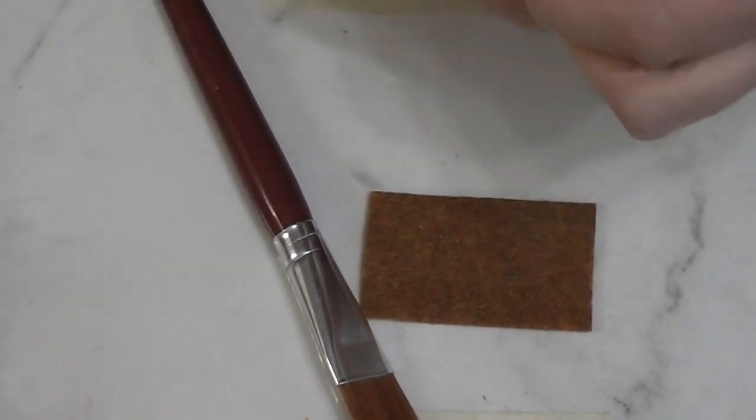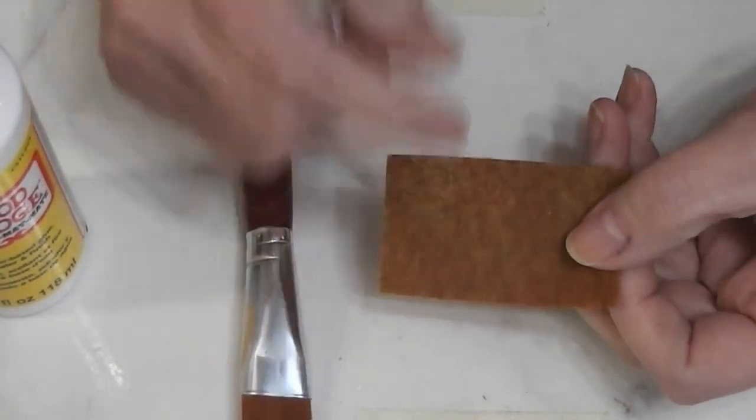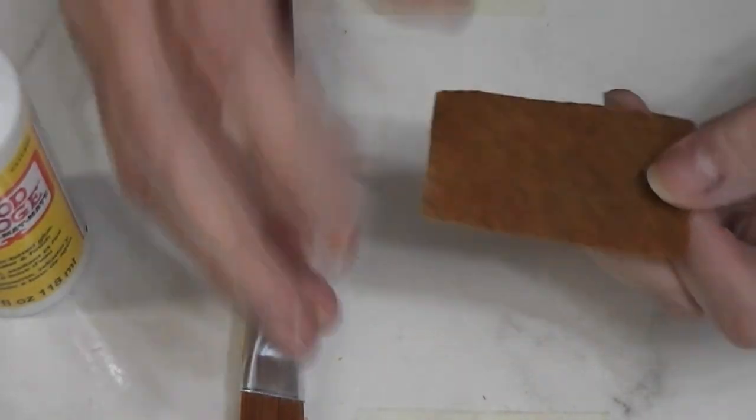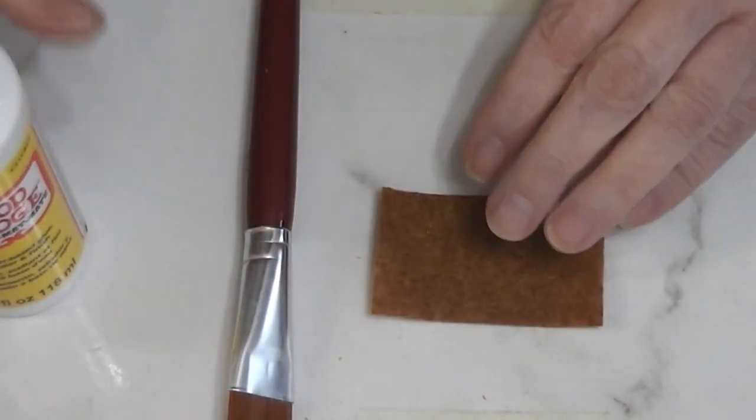Alright, like with most of our doormats that we've made on the channel, we are starting with a piece of this felt. This is some felt that I bought by the yard several years ago, it's just kind of a brown rust color and it's cut one and a half by two and a half inches.